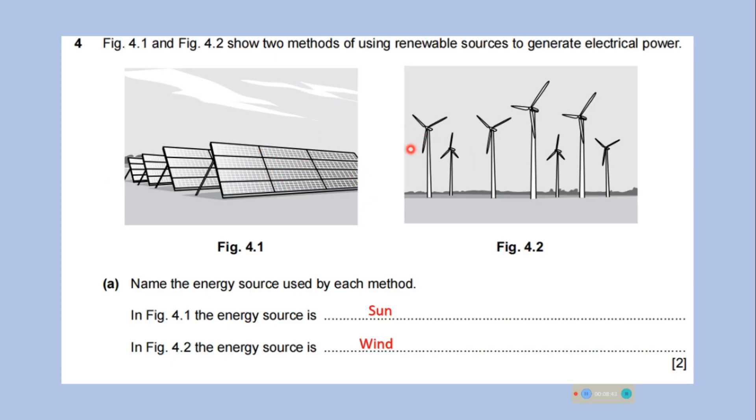These two figures show two methods of using renewable sources to generate electrical power. Name the energy source used by each method. So, in this figure the energy source is sun. These are the solar panels. And in this figure the energy source is wind. So, very easy one.